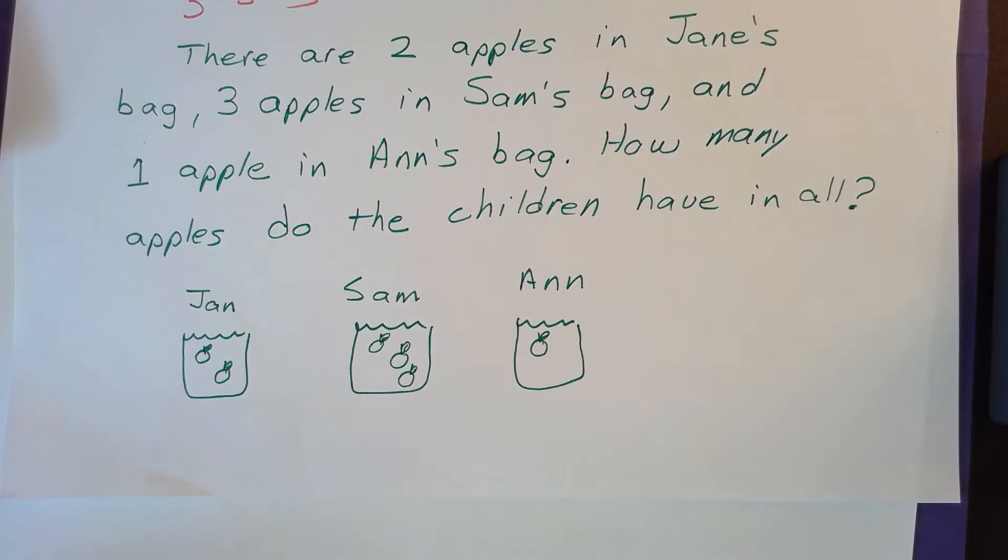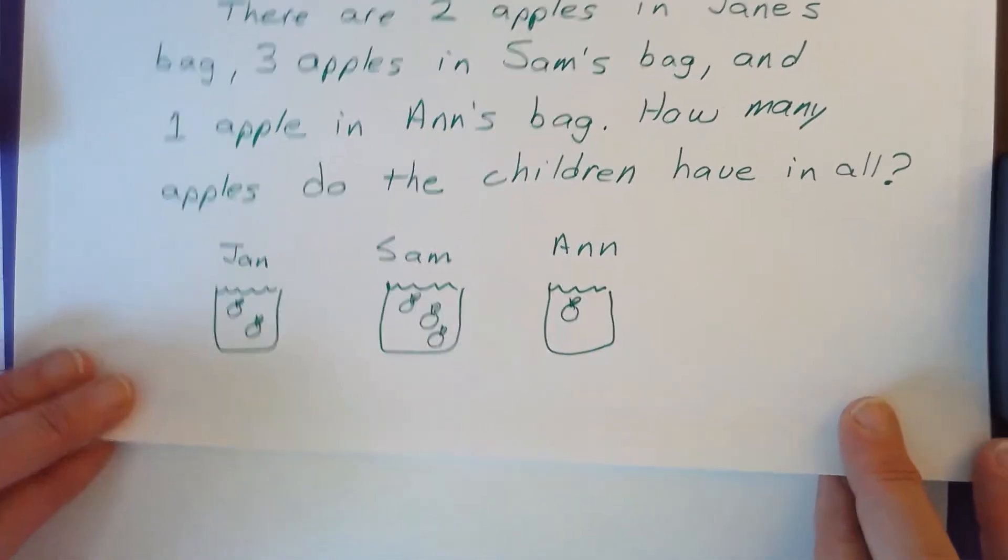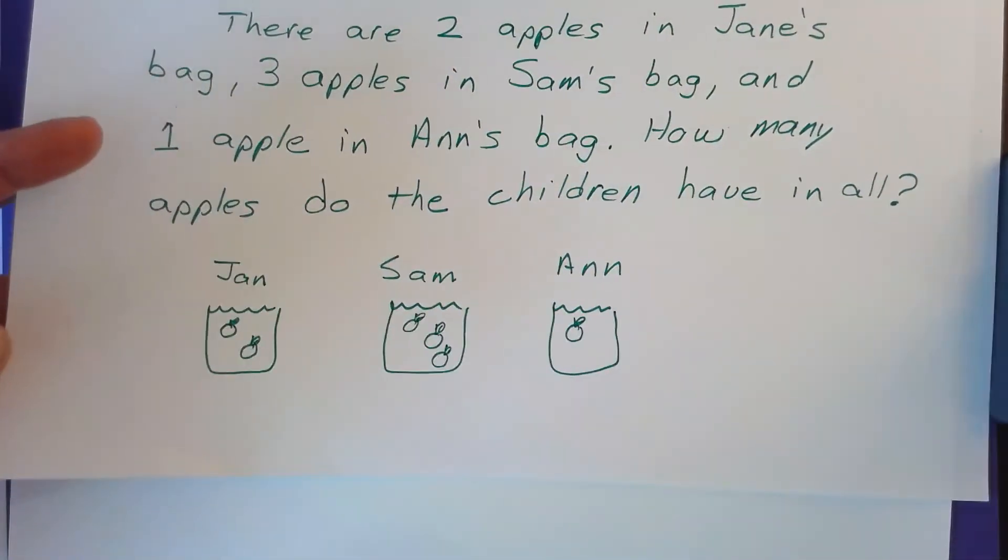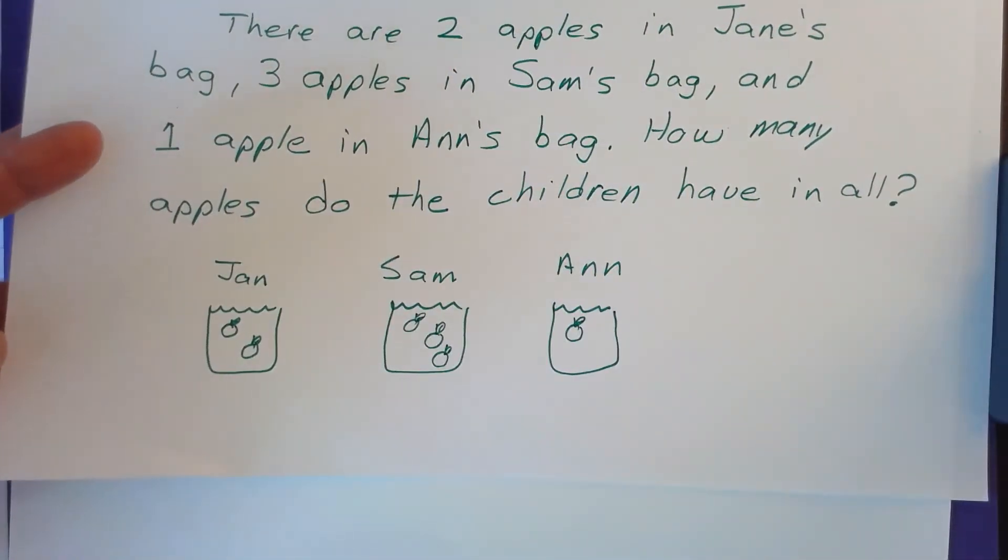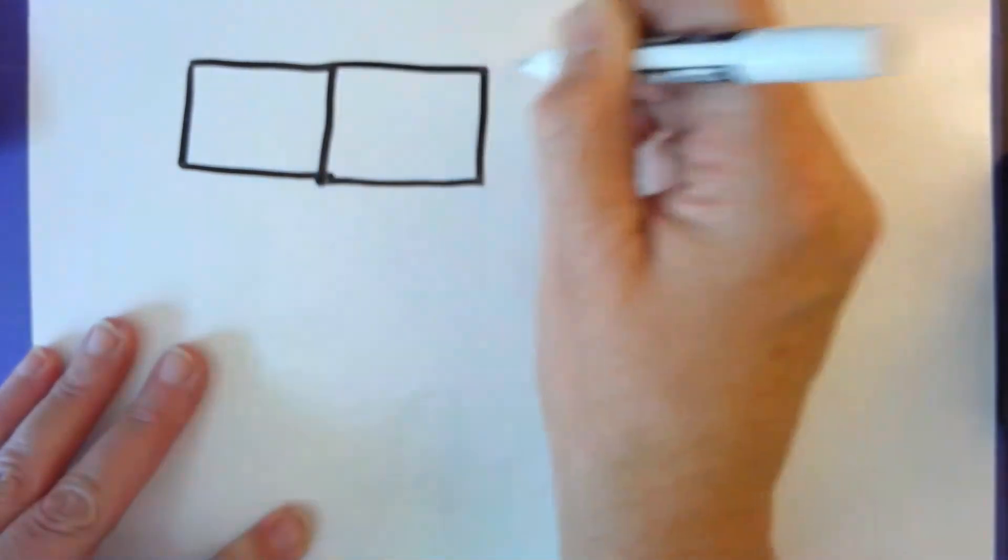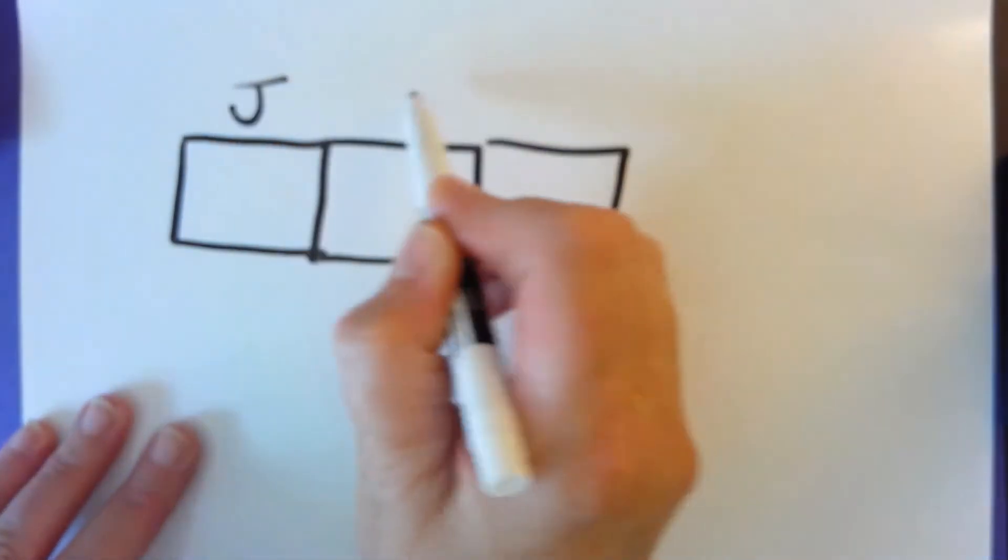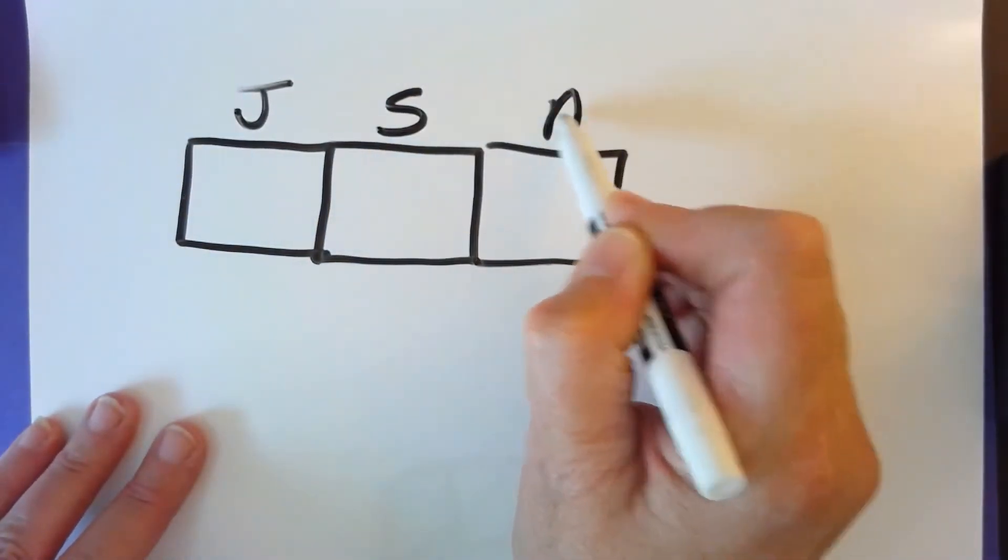So we could draw out the picture, which is one way to solve a problem. We're trying to get it so we can do it quicker and easier. So I'm going to show you a way where we draw a tape diagram. You draw boxes. We have three people. One is Jane, Sam, and Ann.